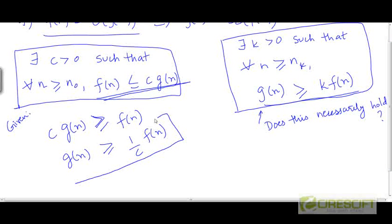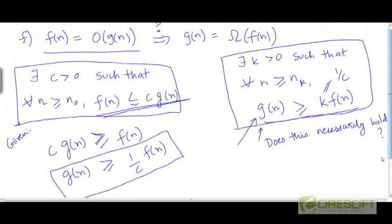Now the form of this inequality is very similar to the form. It is basically identical to the form of this inequality if we take k to be 1/c. So we can say that based on what we are given here, there exists a constant k > 0 such that for all n ≥ the same threshold n₀, we don't need to change the threshold, g(n) will be ≥ k times f(n).